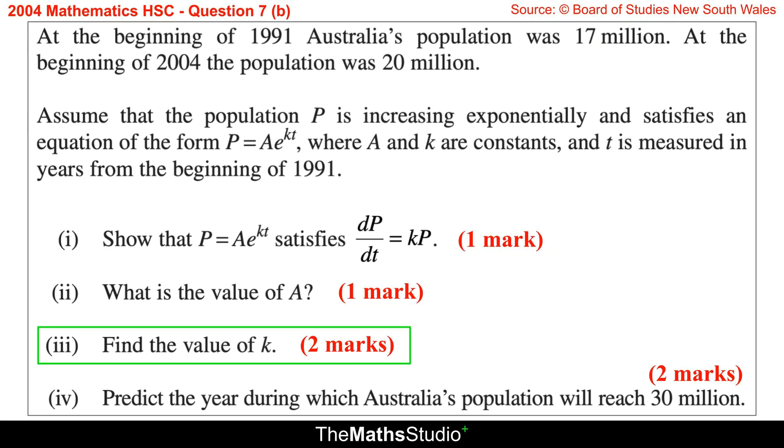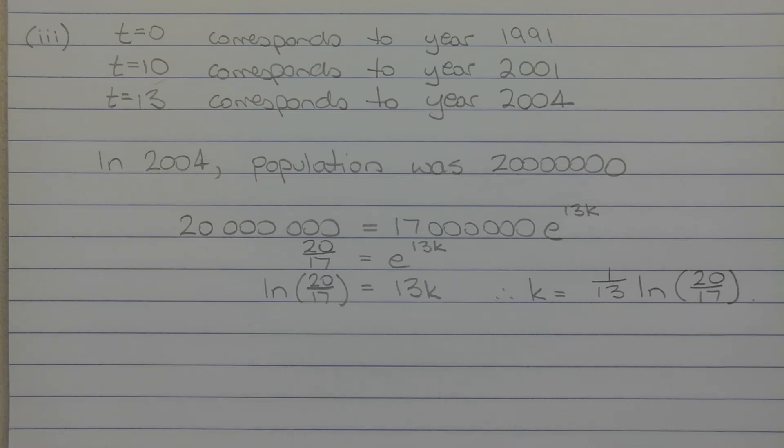Part 3. Find the value of K. We need to apply a boundary condition in order to find the value of K. It's given in the question that in 2004, the population was 20 million. We need to find the value of T that corresponds to 2004. We know that at T equals 0, that corresponds to the year 1991. At T equals 10, that corresponds to 2001. So at T equals 13, that corresponds to the year 2004.